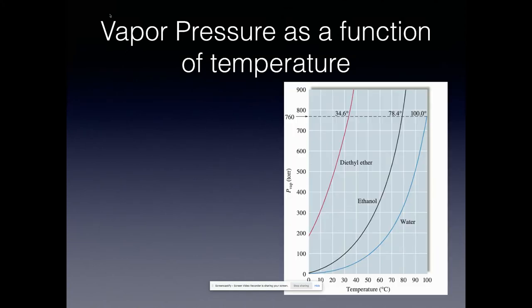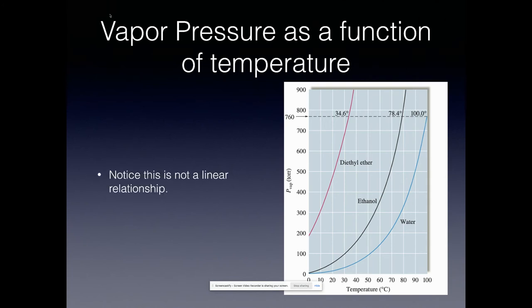When we plot vapor pressure as a function of temperature, the result is a curve — not linear. When you reach a vapor pressure of 760 torr, that's the boiling point. For water, that happens at 100°C — the normal boiling point of water. For ethanol, it's at 78.4°C. The curve is harder to work with mathematically, so we'd like to convert it into a straight line.